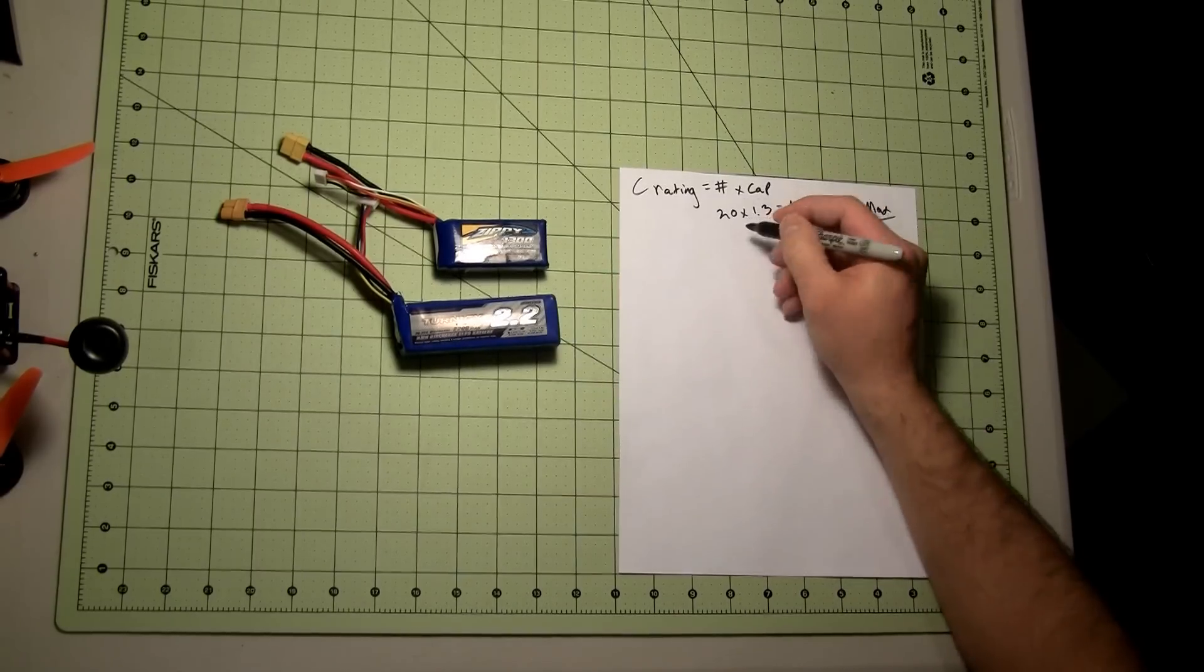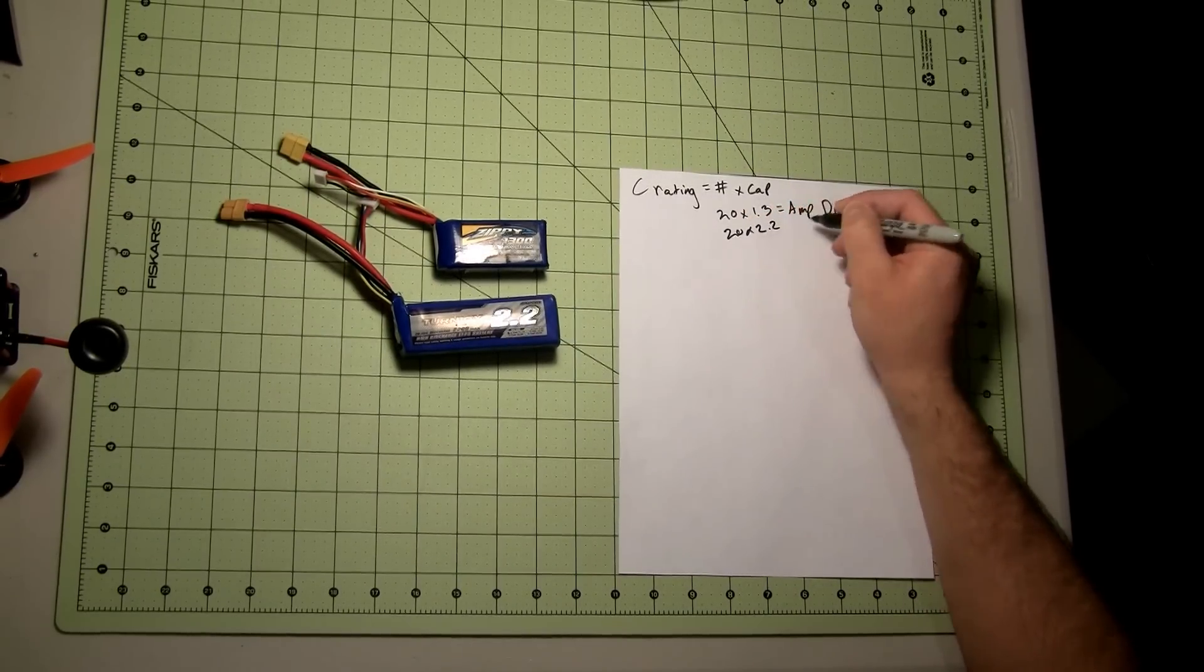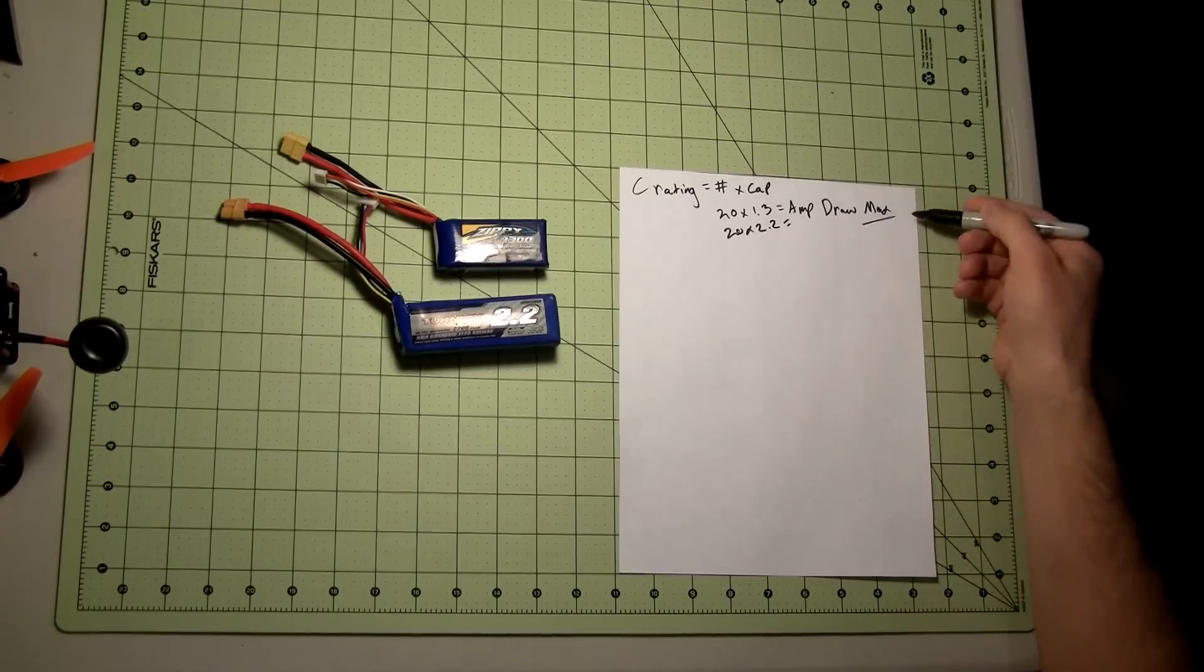Same thing with the 2200 except it's 20 times 2.2 amps equals the most amp draw that it can pull.